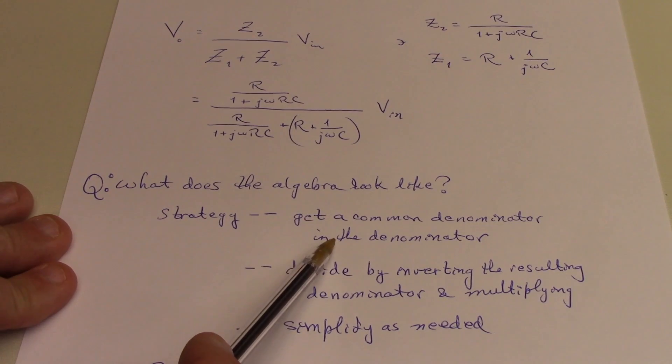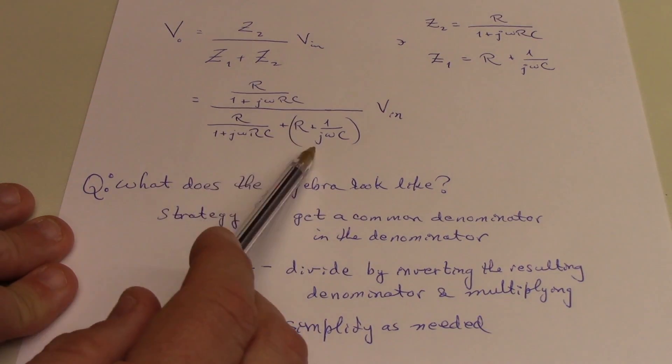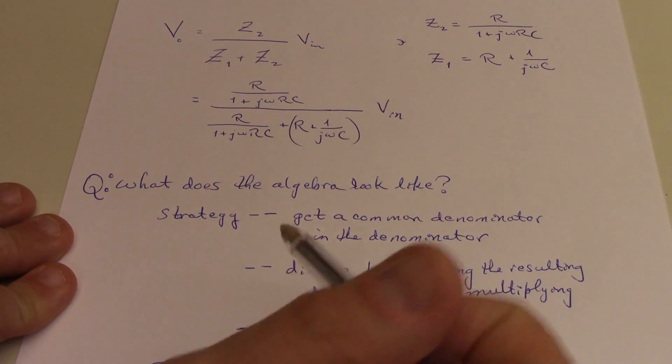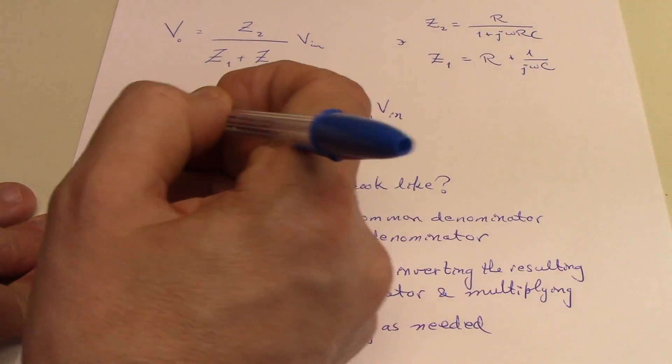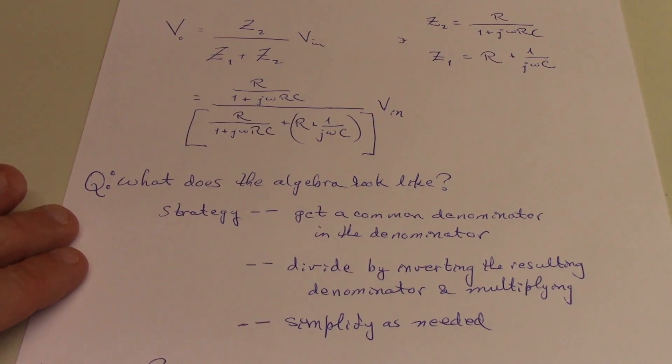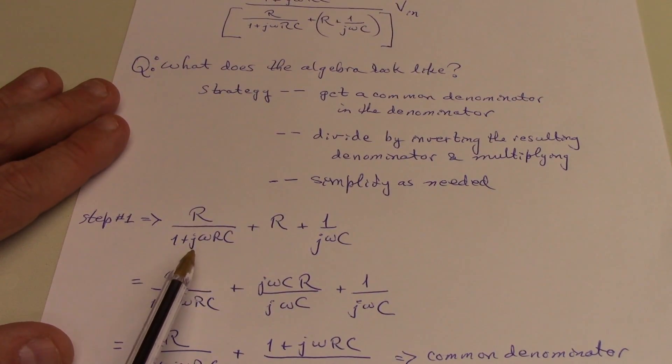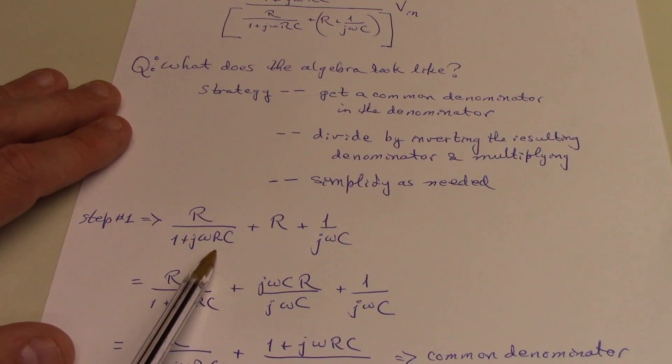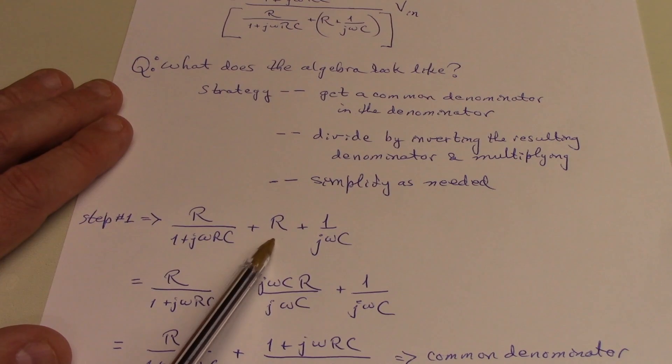So let's do that. Step one is find a common denominator for this expression up here. So I'm just simply looking at the denominator of this. I'm going to rewrite the denominator here. The denominator is r over 1 plus j omega rc plus r plus 1 over j omega c.